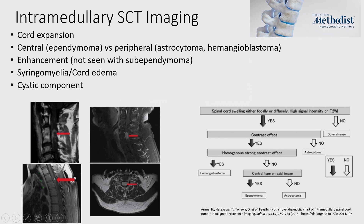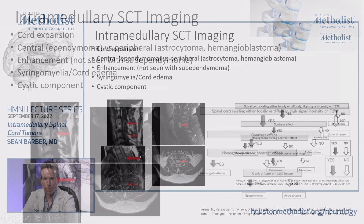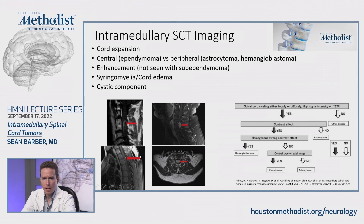Ependymoma is typically strongly enhancing. Astrocytoma, as seen in the top left of those pictures, has some wispy enhancement. The top right shows ependymoma, which is strongly enhancing, and the bottom left shows a hemangioblastoma, which is more dorsal and also strongly enhancing. Many tumors will have variable degrees of syringomyelia — a fluid collection inside the spinal cord — or spinal cord edema seen on T2 sequences. They may also have a cystic component. The bottom right shows a chart from a paper walking through how to distinguish tumor subtypes on MRI, though it's impossible to distinguish them with certainty.